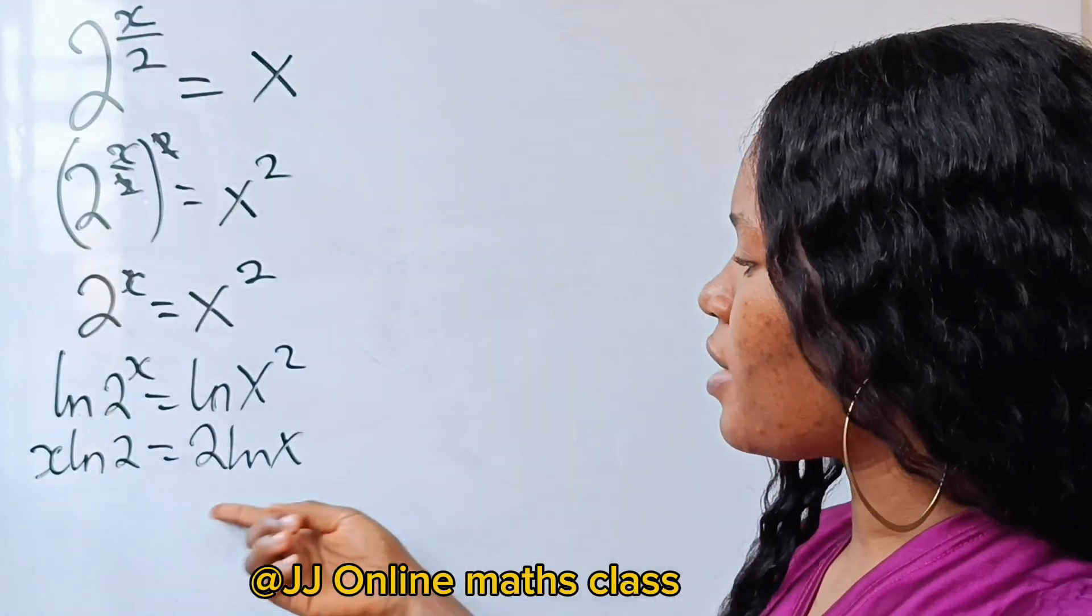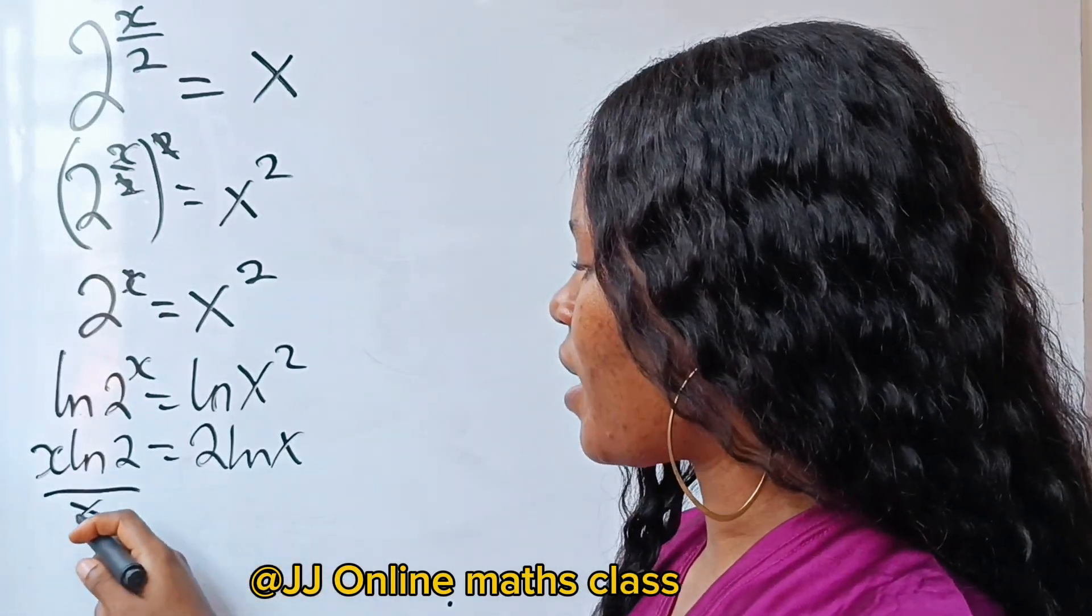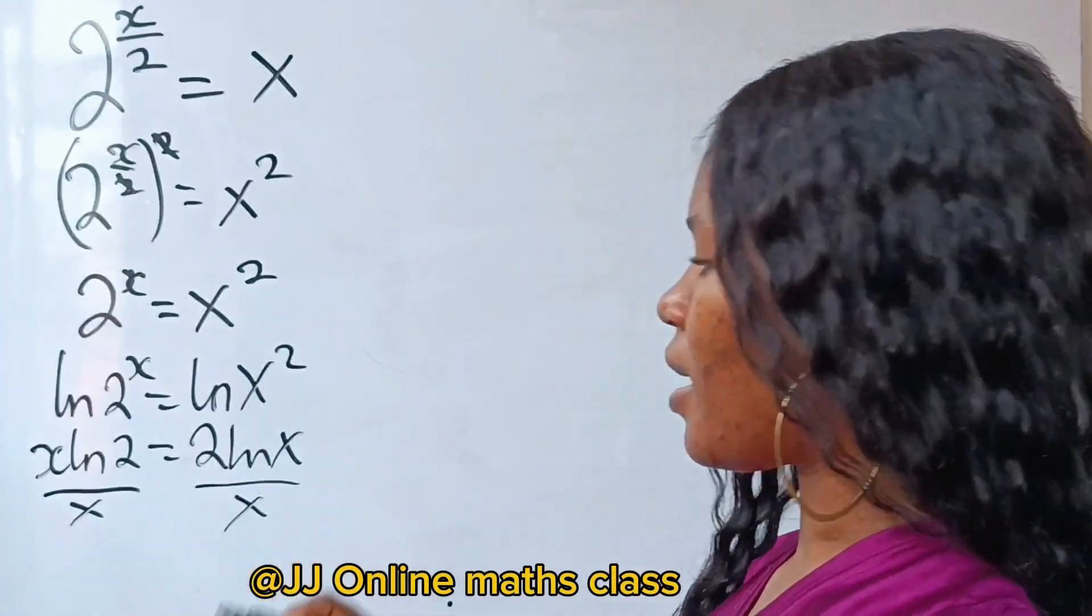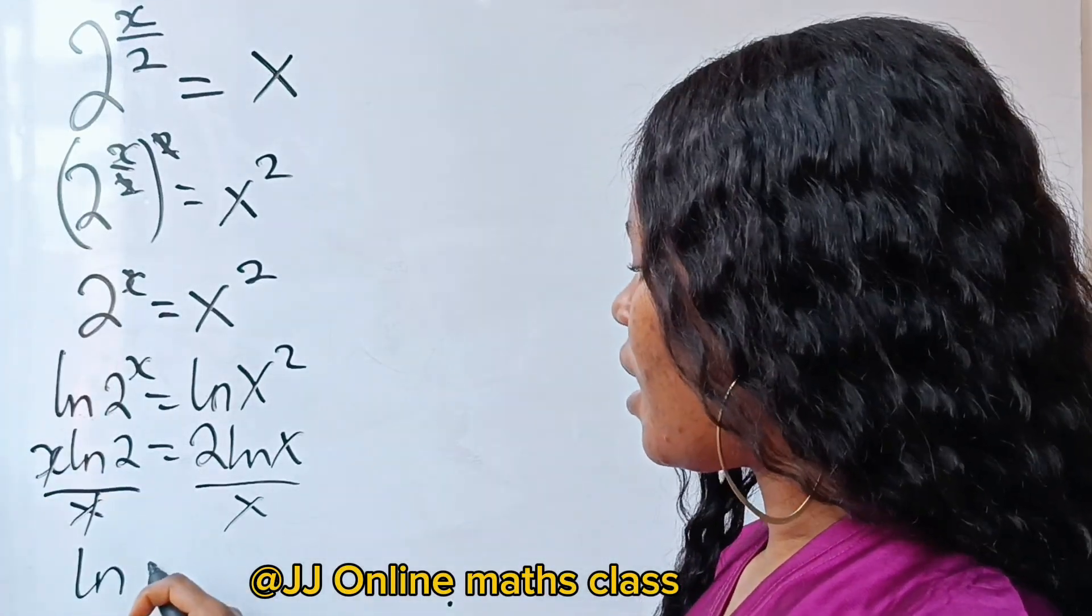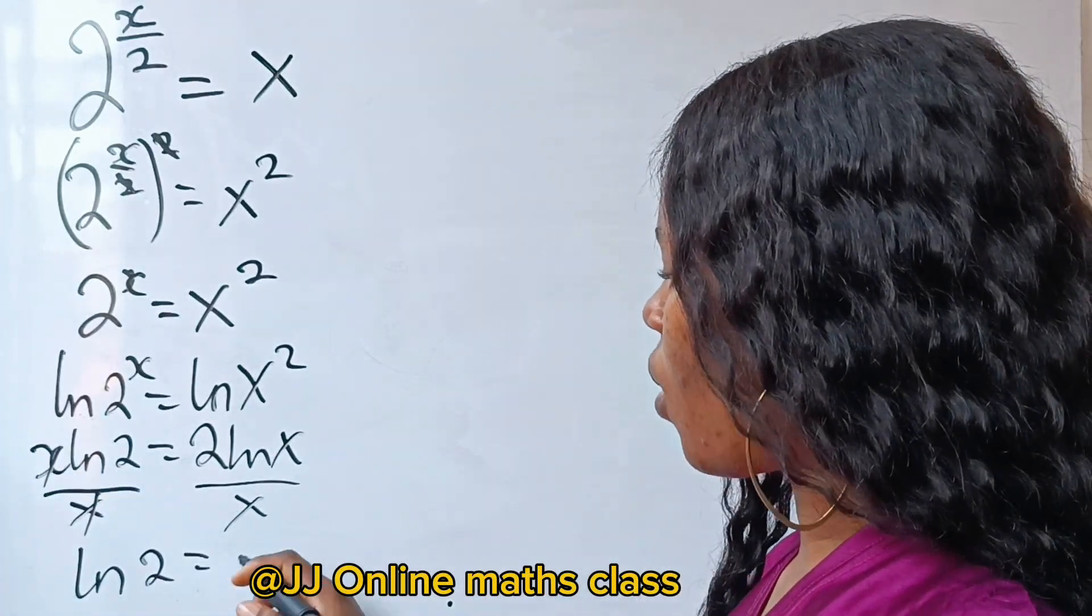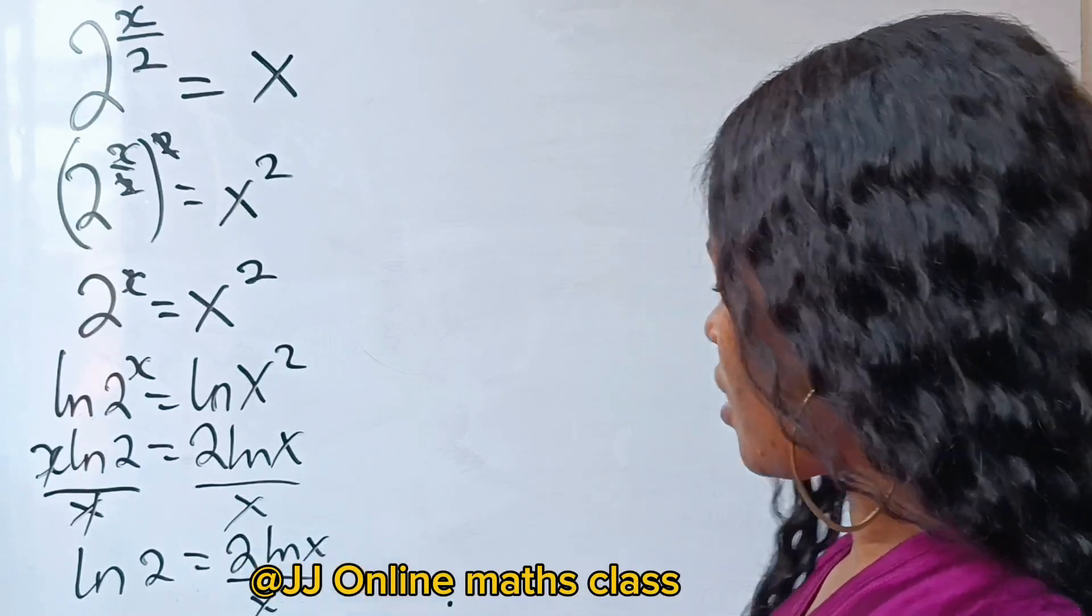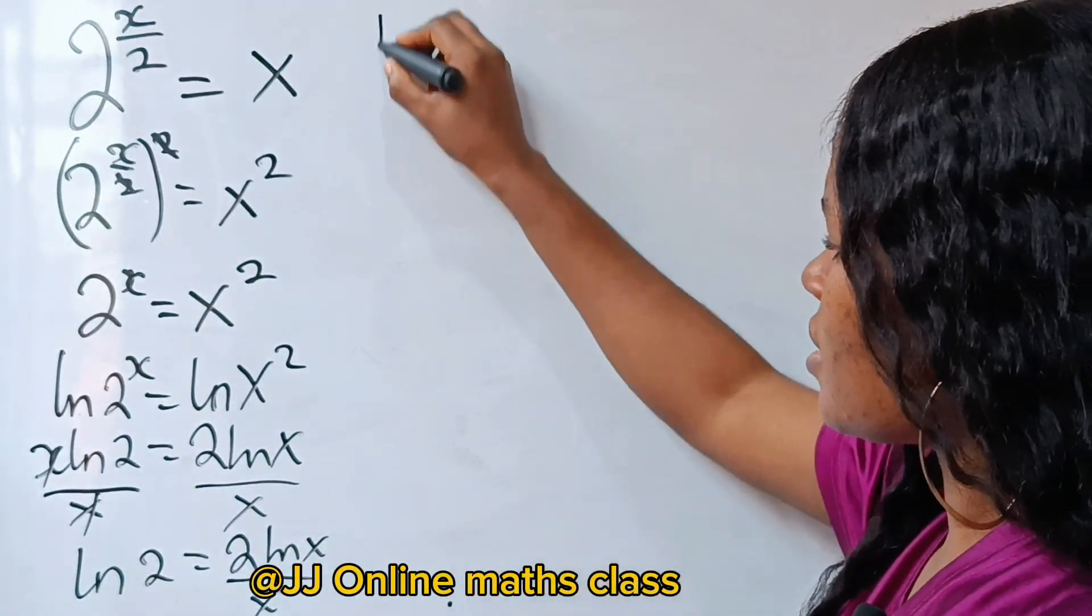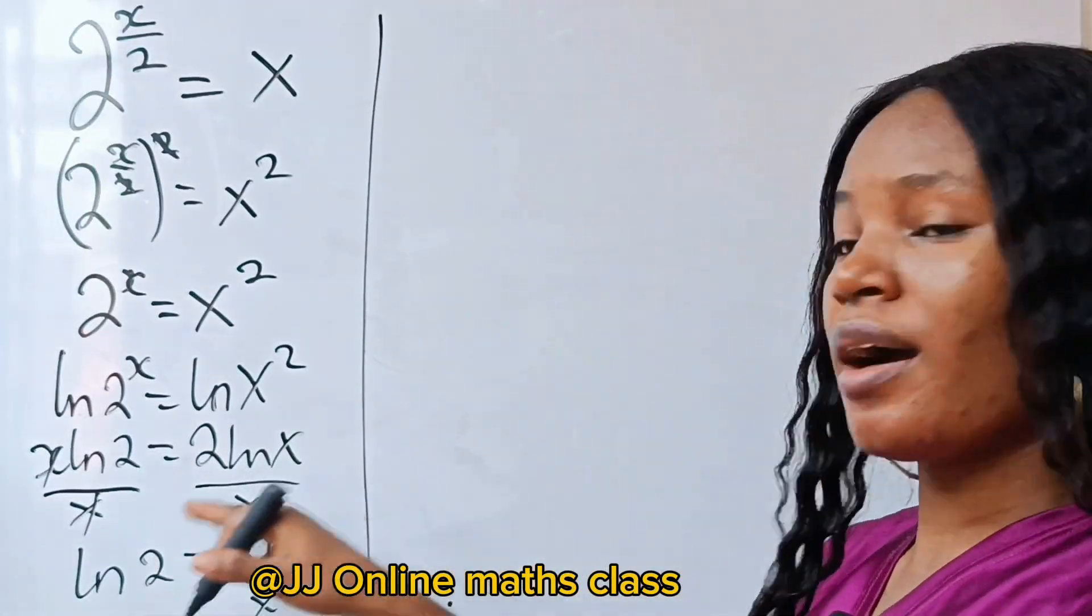So let's divide both sides of this equation by x. So if we do that, this divided by x, this divided by x. We cancel this, we have that ln 2 is equal to 2 ln x over x. So this is what we have this side of the board. This is what we have down here.